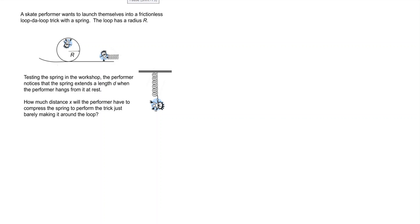Okay, here we are again with yet another look at the loop-de-loop problem. We said in a previous problem that at the top of the loop, in order to just make it around, the velocity at the top has to be the square root of gr.